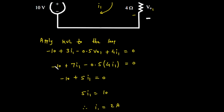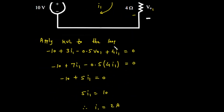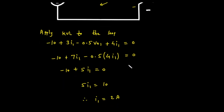Let's combine the terms with the current I1. The 2, 1, and 4-ohm resistors are in series, so we add them up. This gives: minus 10, plus 7 times I1, minus 0.5 times V01, equals 0. We also know the relationship between V01 and I1 from Ohm's law. V01 is the voltage across the 4-ohm resistor, so V01 equals 4 times I1.